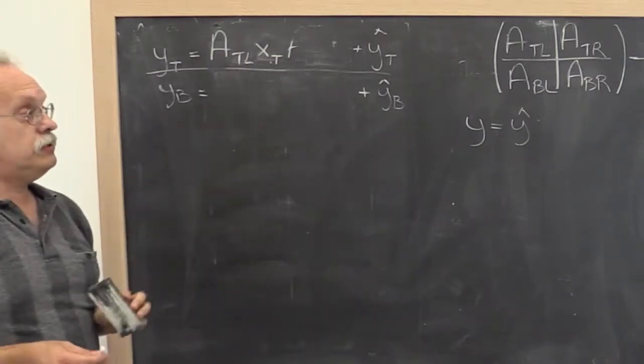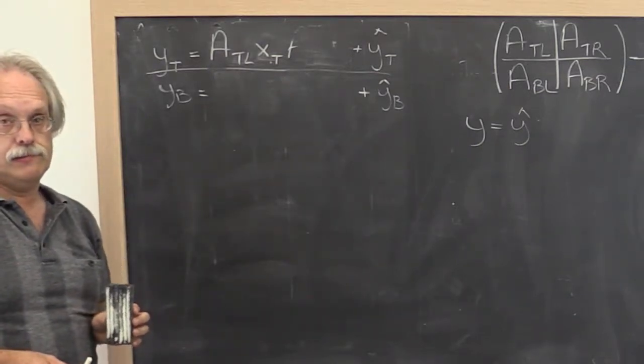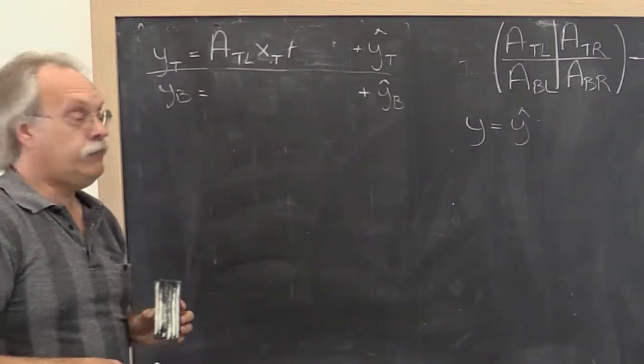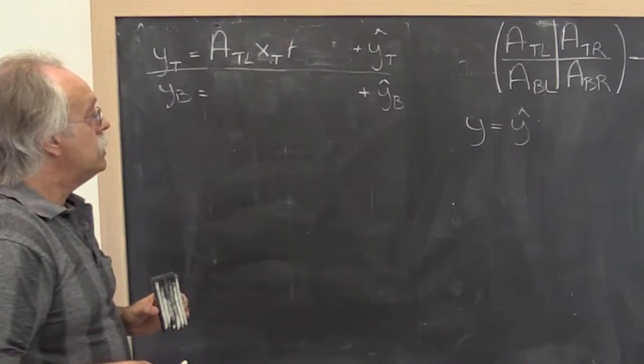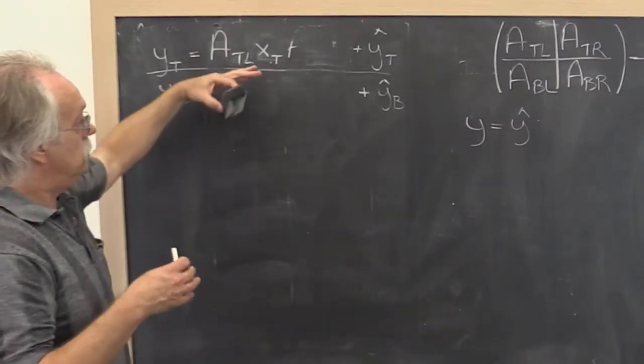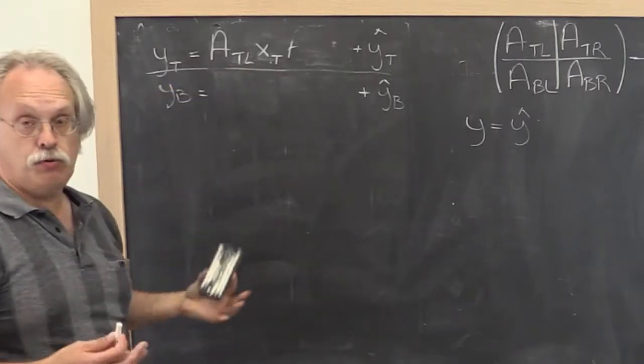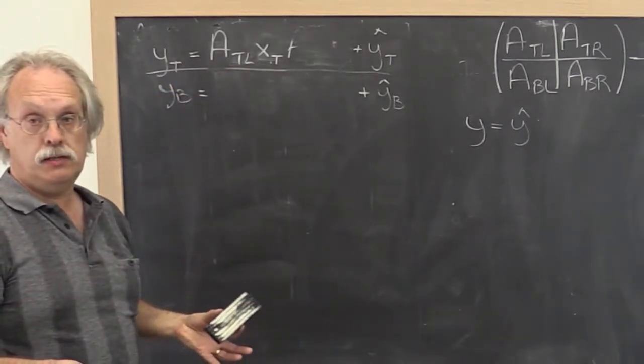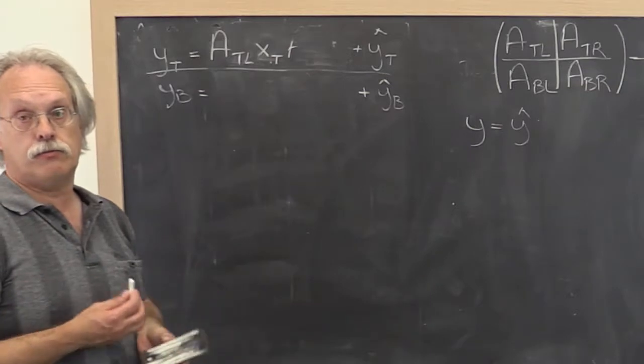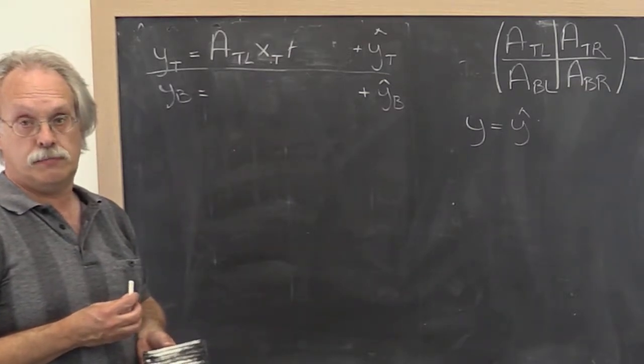Okay, so what if we pick that to be our loop invariant? And what if we now say, again, it's not that hard to reason through what the loop guard must be, it's not that hard to reason through what the initialization step should be.